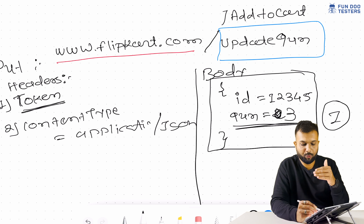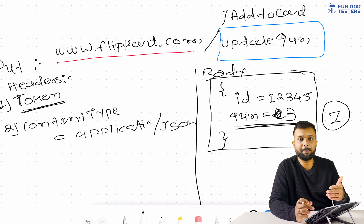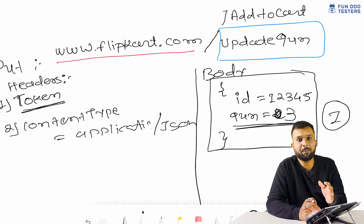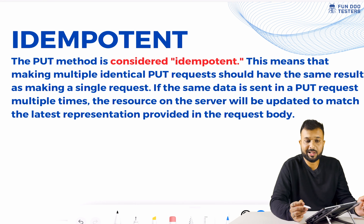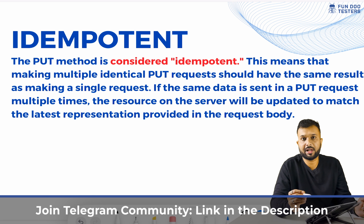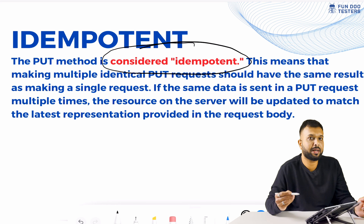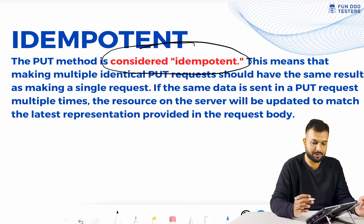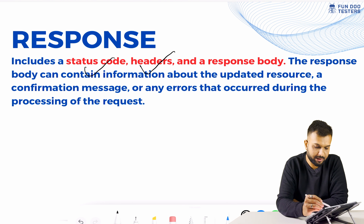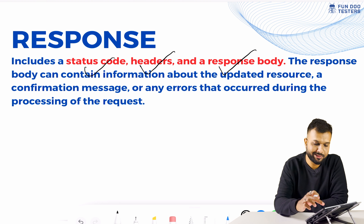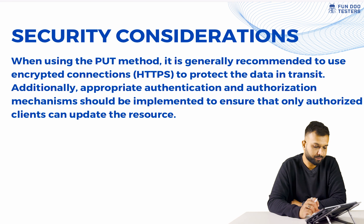Another property of a PUT request is that it is idempotent, meaning it is a repeatable operation. If we trigger the same PUT request multiple times — setting quantity to 3 — the quantity will always remain 3. It won't change by hitting the request multiple times; it will just override with the same value. This is an important interview point: the nature of a PUT request is idempotent — we can repeatedly hit it multiple times without a different result.